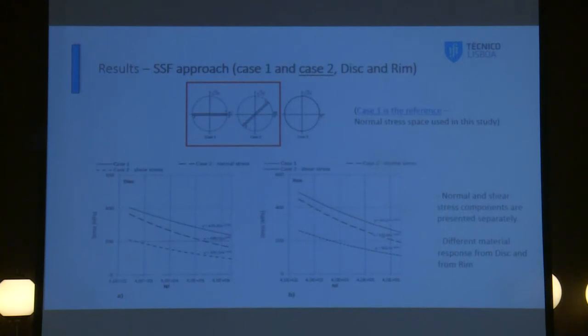Now, applying these results to our approach, HCF approach, for case 2 and case 1. Case 1 is always the reference. We consider here not the shear stress space but the normal stress space in this case. As you can see here, what I did was I separated for case 2 the components. This one is the normal stress component and this one is the shear stress component in the rim. Just to show that I can separate the load. And of course, the different slopes means that we have different behavior, different materials in the web and in the rim.